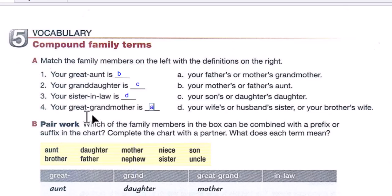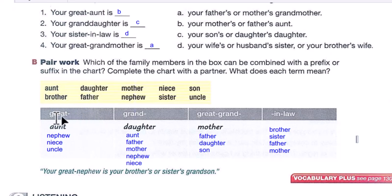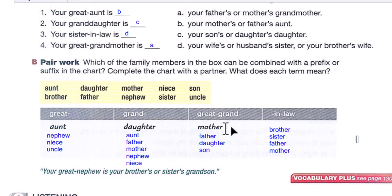Number three: your sister-in-law is your wife's or husband's sister, or your brother's wife. Number four: your great grandmother is your father's or mother's grandmother. Now, which family members can be combined with a prefix or suffix? Complete the chart with your partner. We have: great — great aunt, great nephew, great niece, great uncle; grand — granddaughter, grandfather, grandmother, grand nephew; in-law — brother-in-law, sister-in-law, father-in-law, mother-in-law.